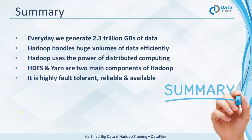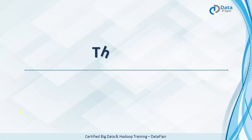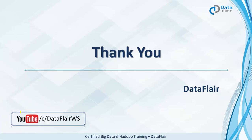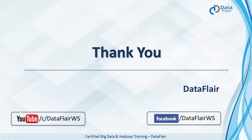To summarize: every day we generate 2.3 trillion GB of data. Hadoop handles these huge volumes of data quite efficiently using the power of distributed computing, which makes it lightning fast. HDFS and YARN are the two main components of Hadoop, and Hadoop is highly fault tolerant, reliable, and available. That's it for the introduction to Hadoop. I hope you enjoyed the session — please subscribe to our YouTube channel for more videos.